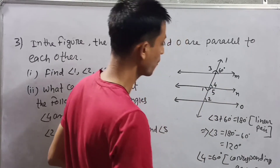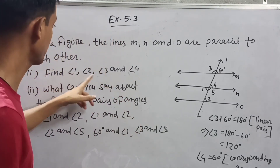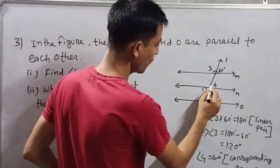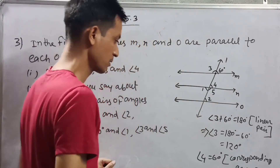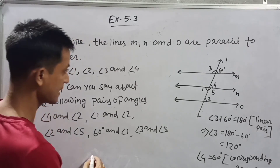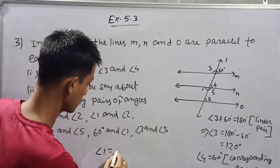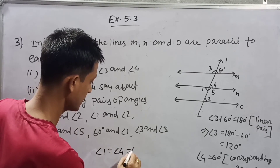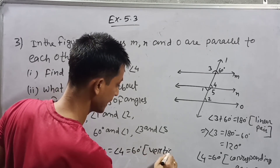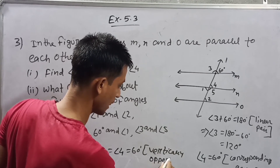Now we need to find angles 1 and 2. Angle 1 and angle 4 are vertically opposite angles, so vertically opposite angles are equal. Therefore angle 1 is equal to angle 4, which is 60 degrees — vertically opposite angles.